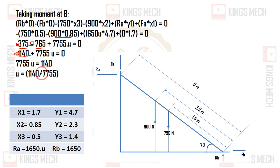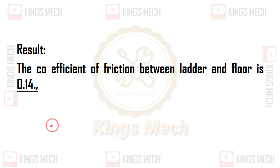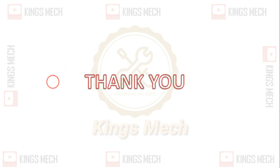U (coefficient of friction) equals 1400 divided by 7785, which gives a value equal to 0.14. So the coefficient of friction between the ladder and the floor is 0.14. That completes this problem. Like the content, share the content, and put your comments in the comments box. Thanks for watching this video.